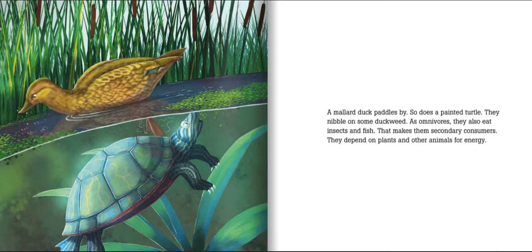They nibble on some duckweed. As omnivores, they also eat insects and fish — that makes them secondary consumers. They depend on plants and other animals for energy.